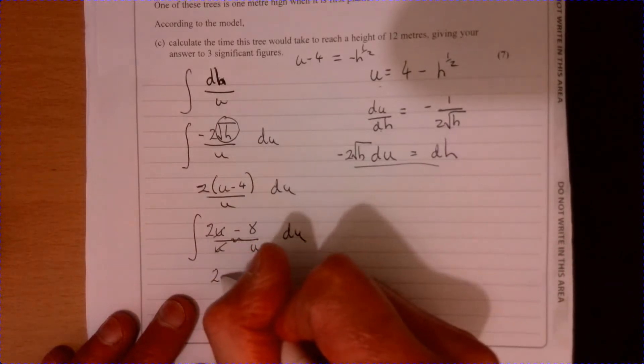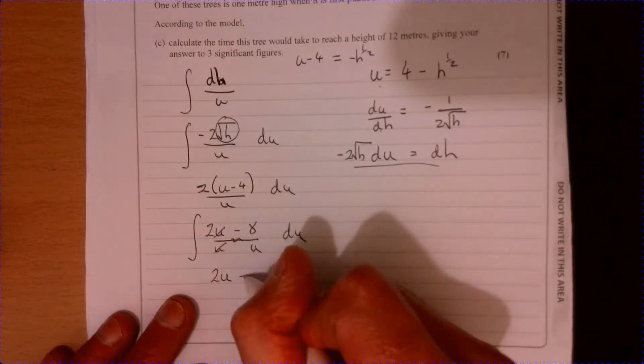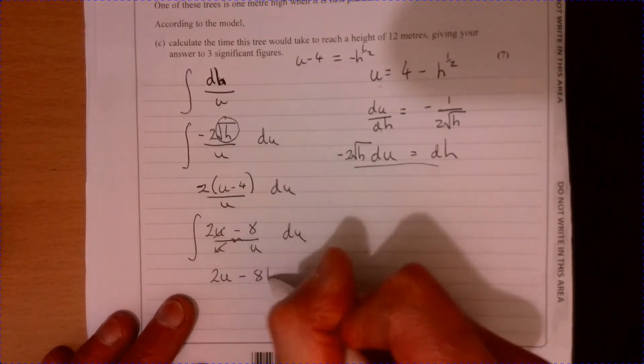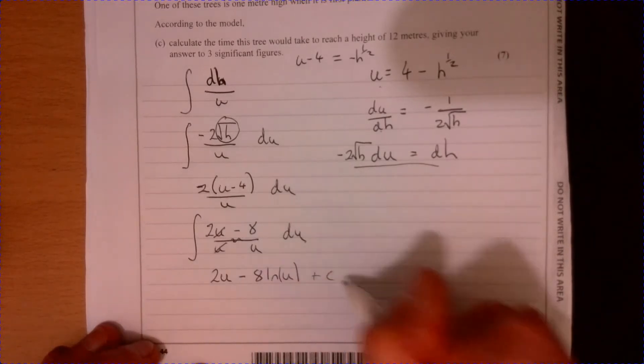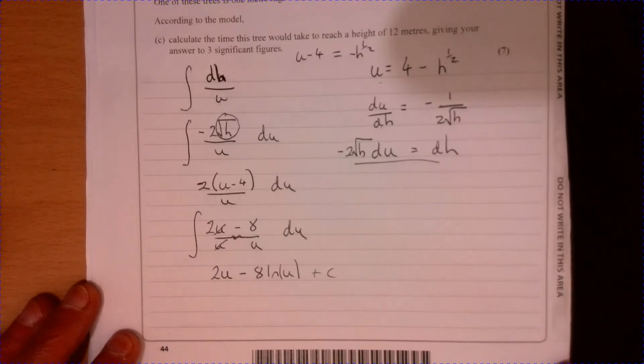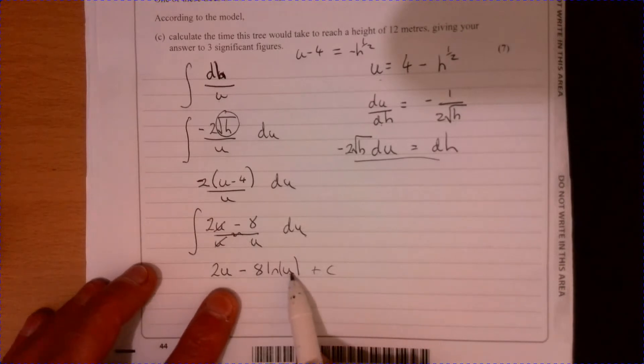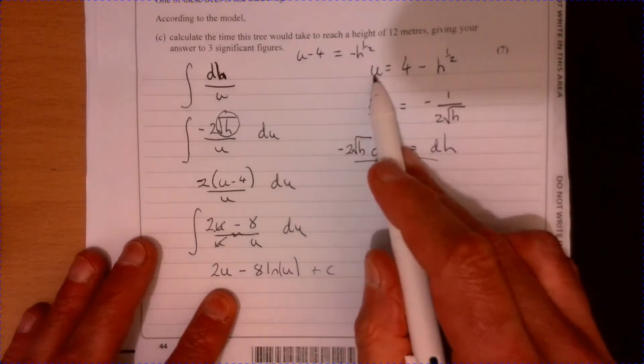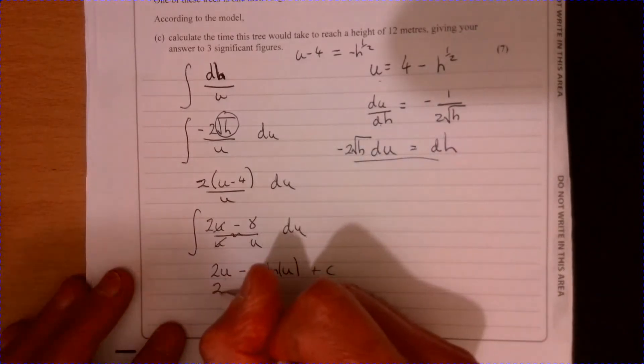The two u's they're going to cancel each other out so if we integrate this part with respect to u there that's just going to give me the function which is equal to 2u and then we can have a minus 8 ln u that's just going to be natural log we're going to add plus c plus something.